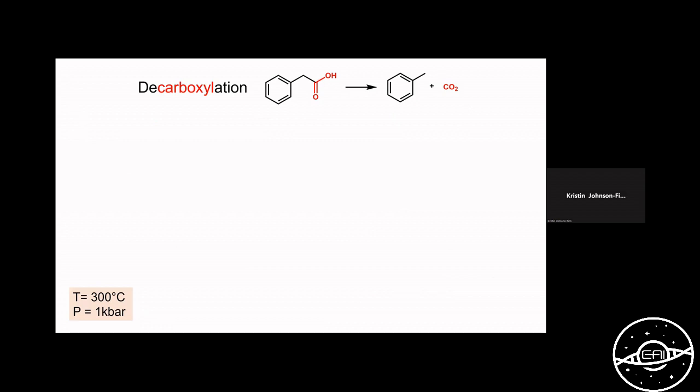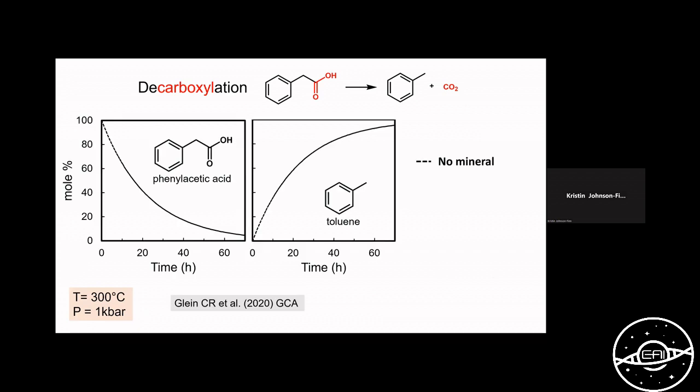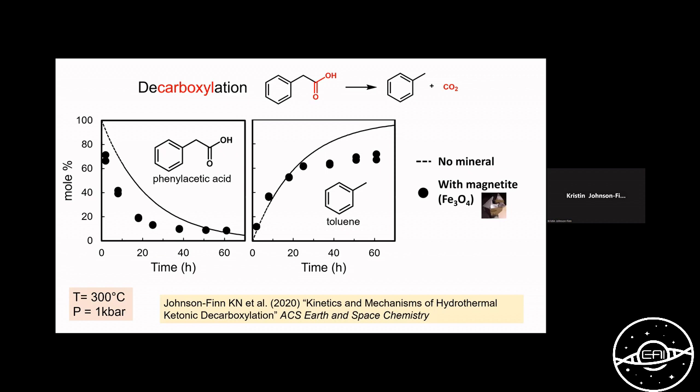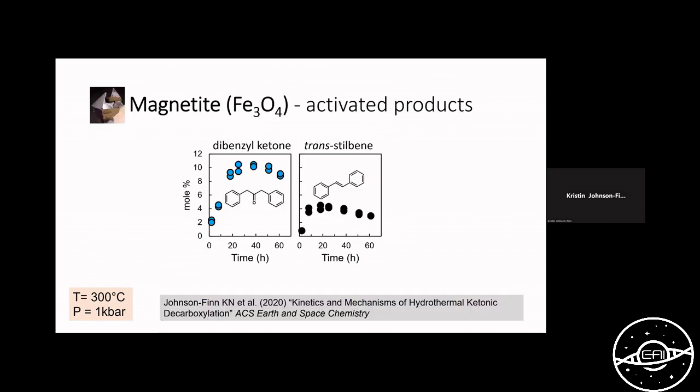For the organic compound phenylacetic acid, one of the major pathways that was observed was decarboxylation, the formation of toluene and the generation of CO2. This is from a study published in 2010 by Chris Klein. Here you'll see on the x-axis for both of these plots is time and on the y-axis is mole percent. What you're essentially seeing is that for phenylacetic acid, as it is being consumed, it is generating the decarboxylation product toluene in an experiment where no mineral is present.